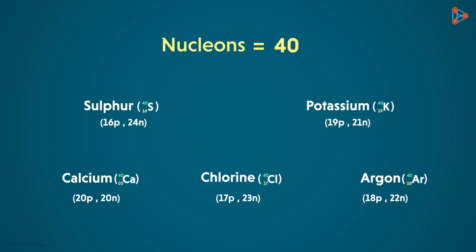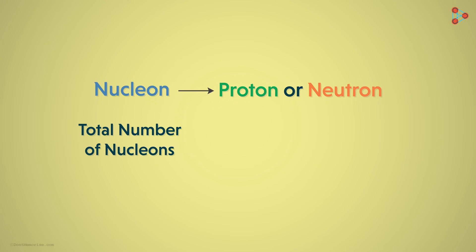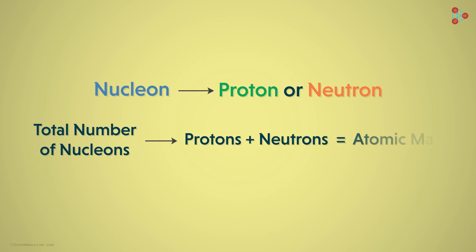What do we mean by a nucleon? A nucleon is a proton or a neutron. Each thing present in a nucleus is a nucleon. So the total number of nucleons in an atom is the sum of protons and neutrons. We can also say that the total number of nucleons in an atom is its atomic mass.